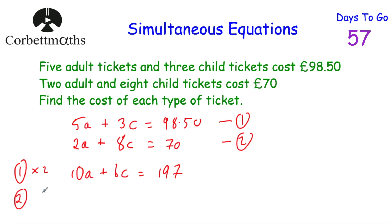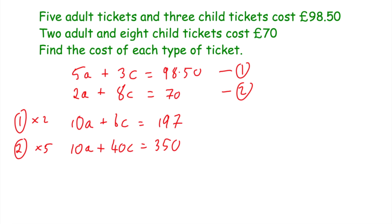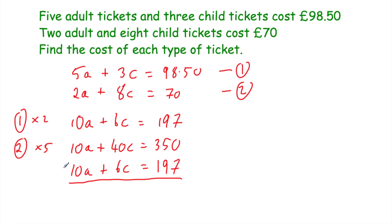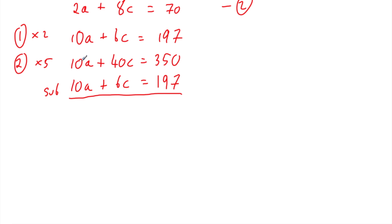We've multiplied equation 1 by 2 and equation 2 by 5, giving us 10A in both. I'm going to write the larger equation on top so the subtraction stays positive. Subtracting: 10A − 10A = 0; 40C − 6C = 34C; and 350 − 197 = 153. So 34C = 153.